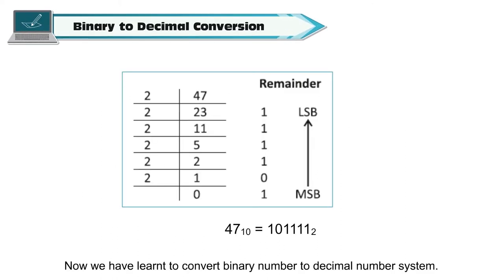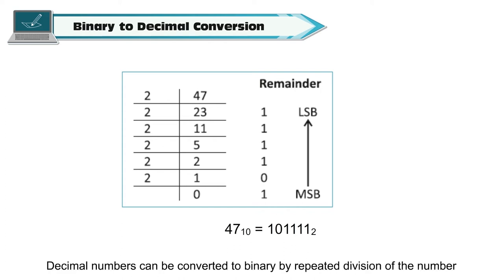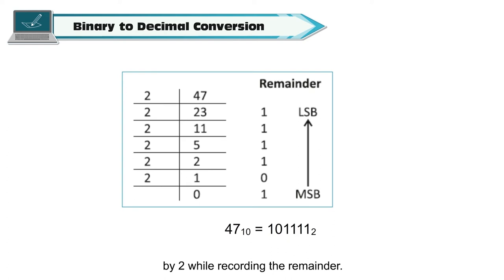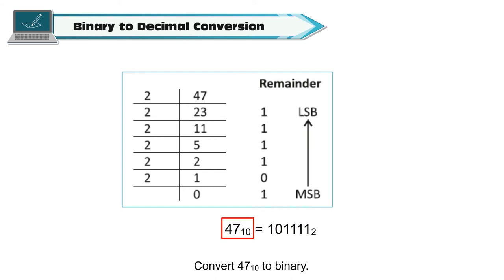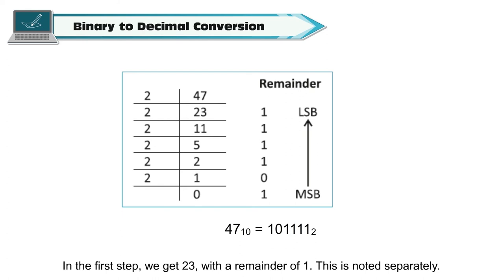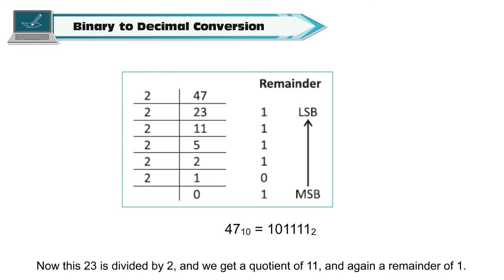Now, we have learned to convert a binary number to the decimal number system. We can also convert a decimal number to binary. Decimal numbers can be converted to binary by repeated division of the number by 2 while recording the remainder. Let us understand how this happens with an example. Convert 47 base 10 to binary. For this, we will start dividing the number 47 by 2. In the first step, we get 23 with a remainder of 1, which is noted separately.